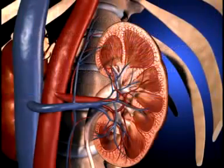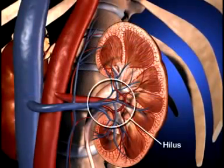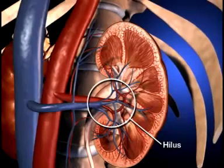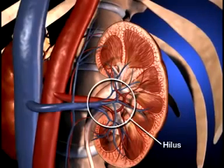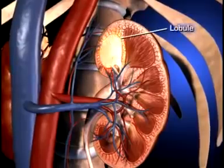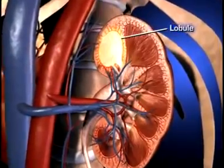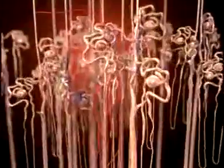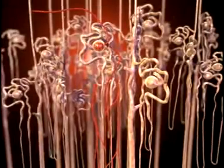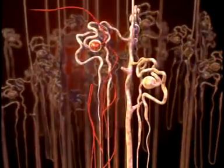The medial border of the kidney is indented by a deep fissure called the hilus, where the blood vessels, nerves, and ureters connect to the kidney. The kidney is composed of up to 18 lobes, and each lobe is composed of nephrons. Nephrons are the functional units of the kidney, and each kidney contains more than 1 million nephrons.